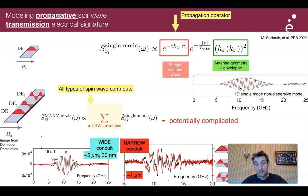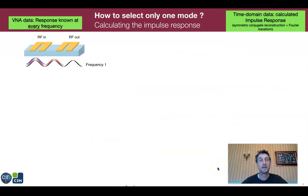Now the question is, how in this complicated spectrum, how to identify the contribution of each spin wave in this ensemble? For this, we do that by going in a time domain and calculating the impulse response.